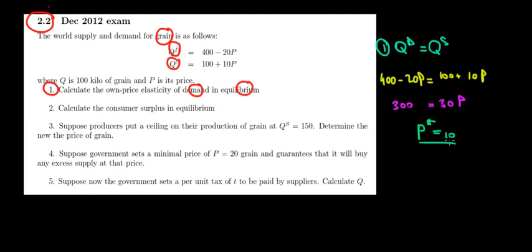Now what's going to be the equilibrium quantity? We can substitute in either of these quantity functions. Let's suppose we substitute it over here. The quantity in equilibrium is going to be equal to 100 plus 10P, 100 plus 10 times 10. So that's equal to 200. That's going to be the quantity in equilibrium. That's the price in equilibrium.